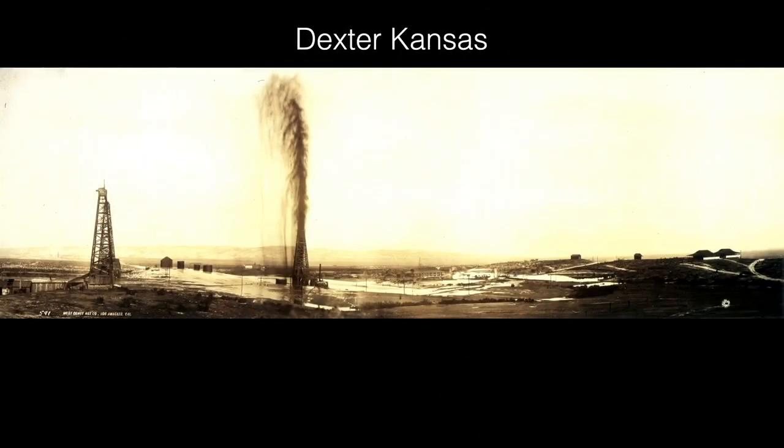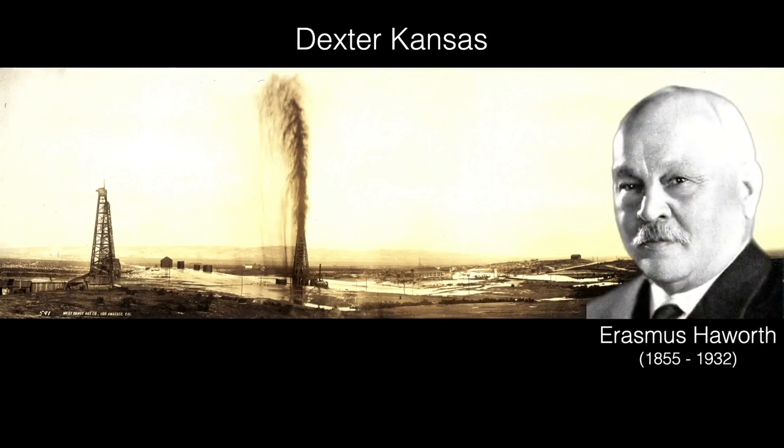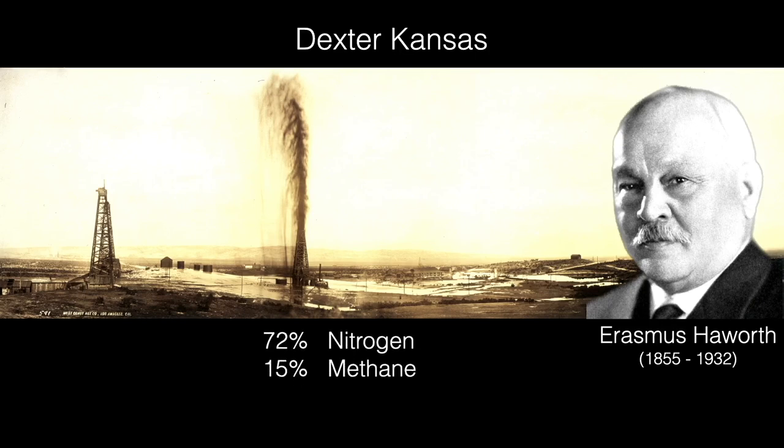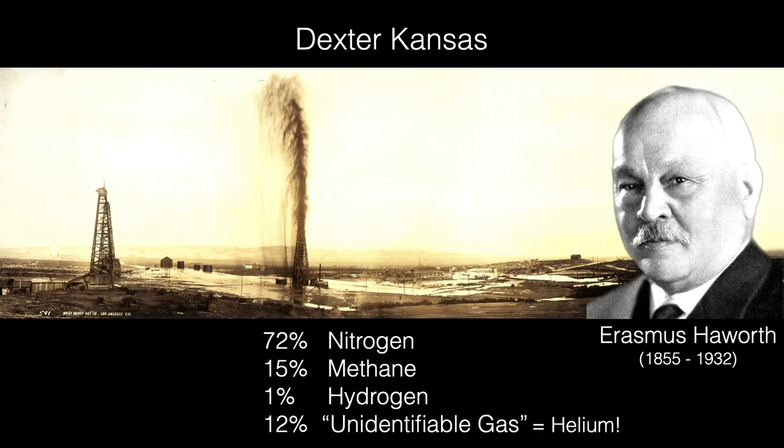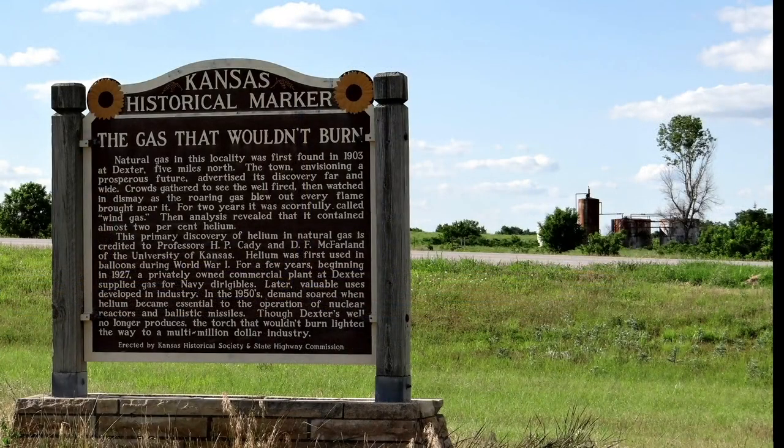Helium is a byproduct of drilling for natural gas. In 1903, geologist Erasmus Hallworth collected a sample of gas from a well drilled in Dexter, Kansas. He found the gas contained 72% nitrogen, 15% methane, 1% hydrogen, and 12% of an unidentifiable gas. That gas turned out to be helium, which was previously thought to be very rare on the Earth.